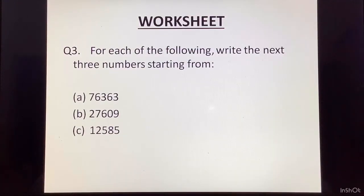Next question. Question number 3. For each of the following, write the next 3 numbers starting from the number given here. The first one. 76,363. So, you will now write next 3 numbers after 76,363. Okay. After this, you have to write 3 more numbers. Well, next one. 27,609. If you don't know what to do, I will give you a hint. Here, you have to add 1 and find the next number. Like this, you will keep on adding 1 three times. And every time when you add 1, you will write that number as answer. The C part. 12,585.